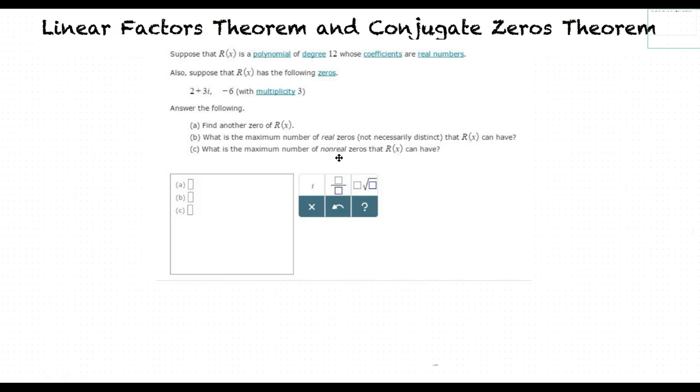Find another zero of r of x. What is the maximum number of real zeros the r of x can have? And what is the maximum number of nonreal zeros the r of x can have?